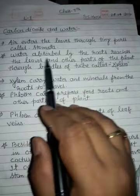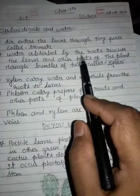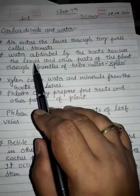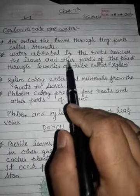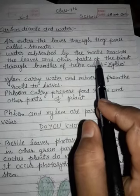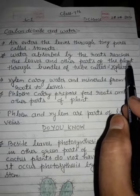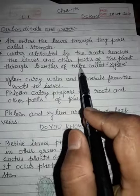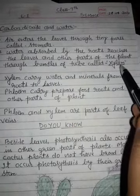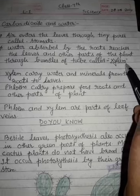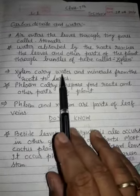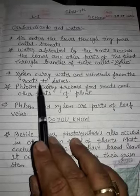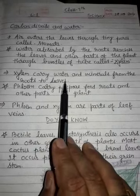Water absorbed by the roots reaches the leaves and other parts of the plant through a bundle of tubes called xylem. Xylem carries water and minerals from the roots to the leaves.